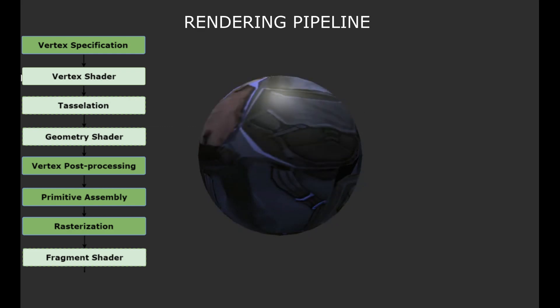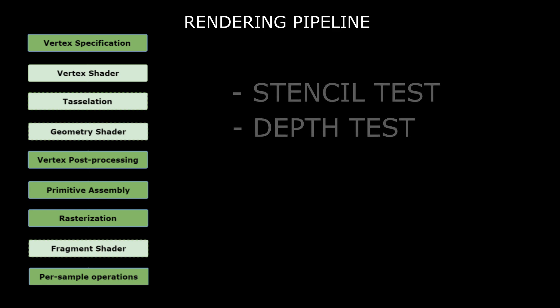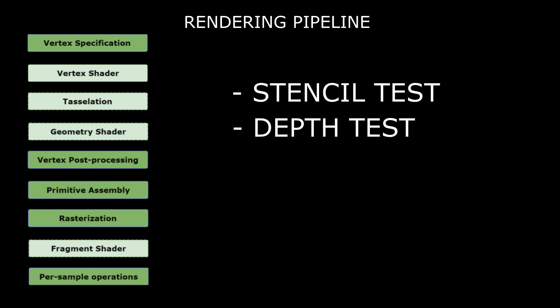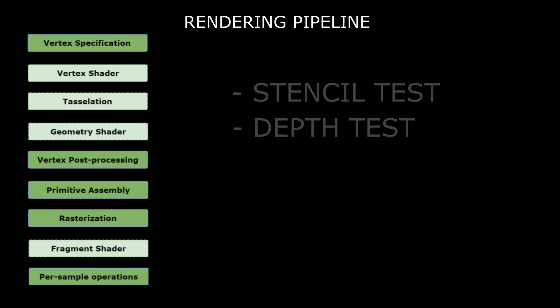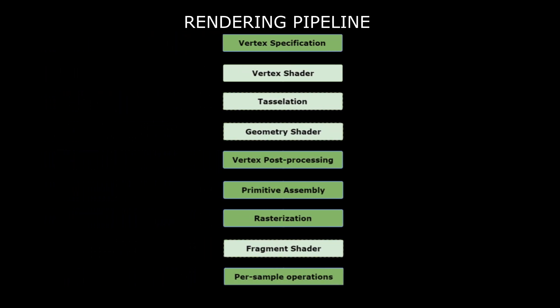The last part is per-sample operations, where a few tests are performed based on whether the user has activated them or not. Some of these tests are stencil tests or depth tests, which we will talk about in future videos. That's how the render pipeline works in a high-level overview. I hope it helps us understand what shaders are doing and when they perform their job.